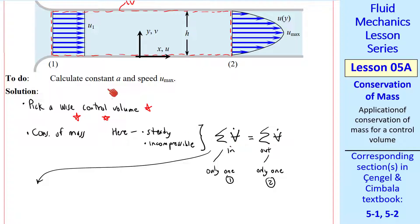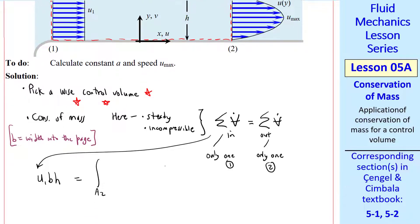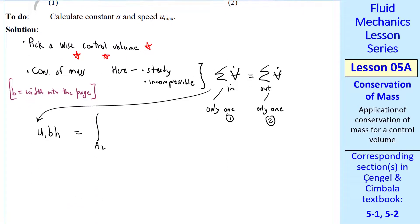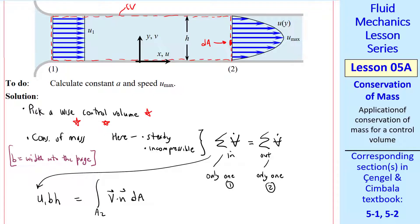At the inlet, the volume flow rate is the speed times the cross-sectional area, or U1 times B times H, where B is the width into the page. For the outlet, we don't have uniform flow, so we need to integrate. We integrate over the cross-sectional area at 2, which we'll call A2.